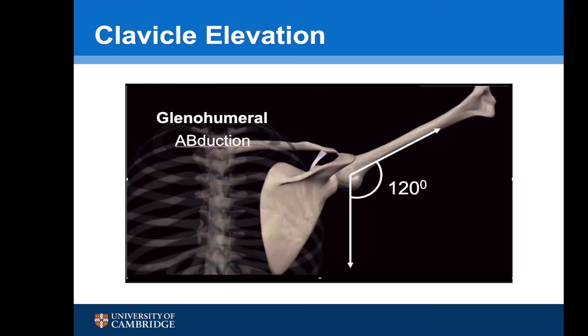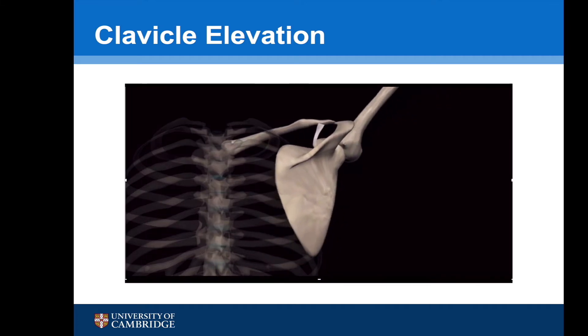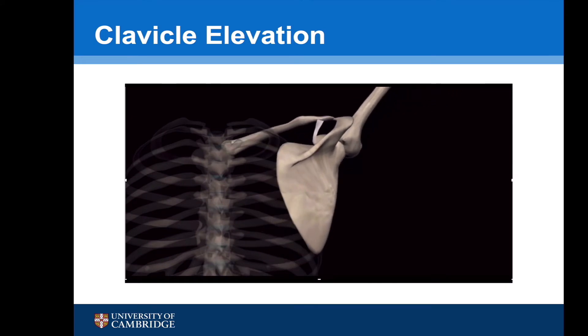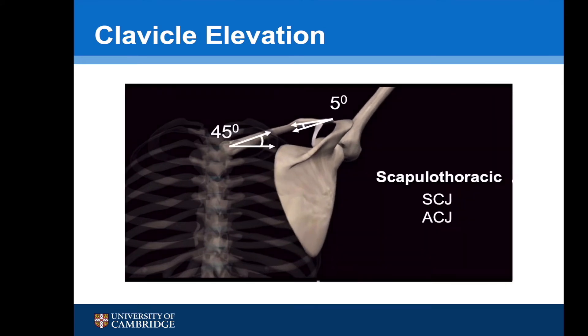On this animation, where there is already maximal abduction of the glenohumeral joint to 120 degrees, movement at the SC joint and AC joint allows the initial clavicle elevation.